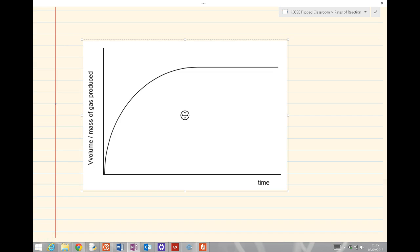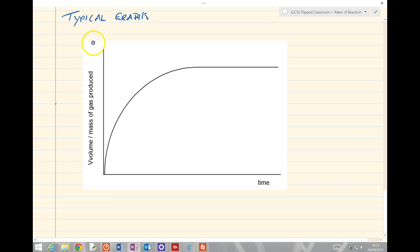So the final thing that we need to look at in this section is typical rates of reaction graphs. In typical graphs you can see here we plot the volume or mass of gas produced on the y-axis and the time taken on the x-axis. So here we're talking about the product produced because that is a concentration going up. There's a couple of things to first note. First, it gets to a constant level. Why do you think that might be?